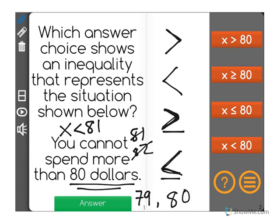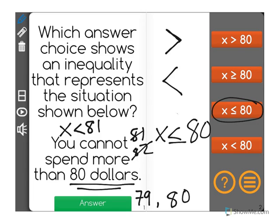So, x is going to be... I'm going to erase some of this space over here. x is going to be less than or equal to $80. Because we can spend $80. But we cannot spend any more. Showing x less than or equal to $80 for the correct answer.